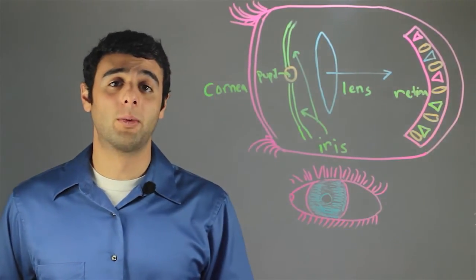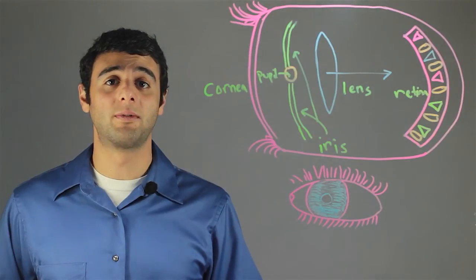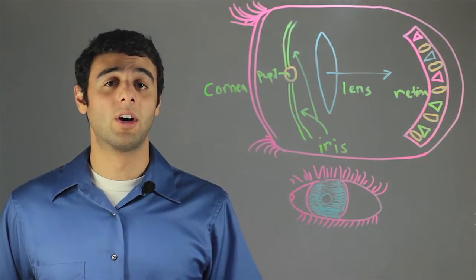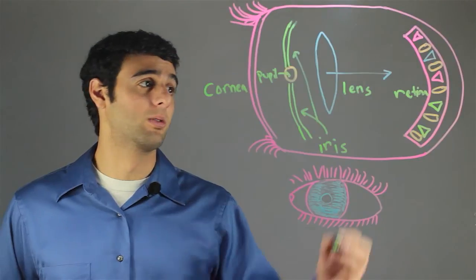The retina contains different photoreceptors. These photoreceptors are called rods and cones.